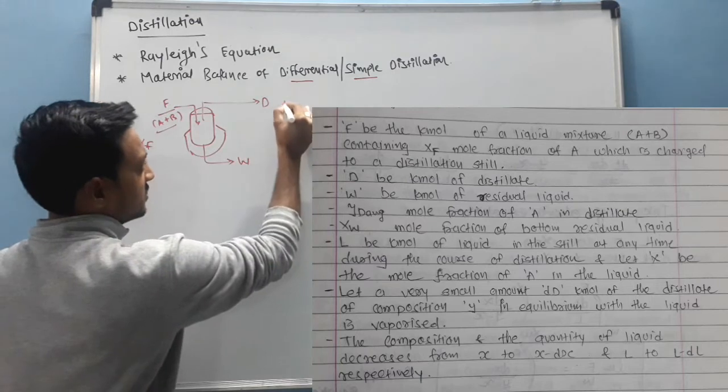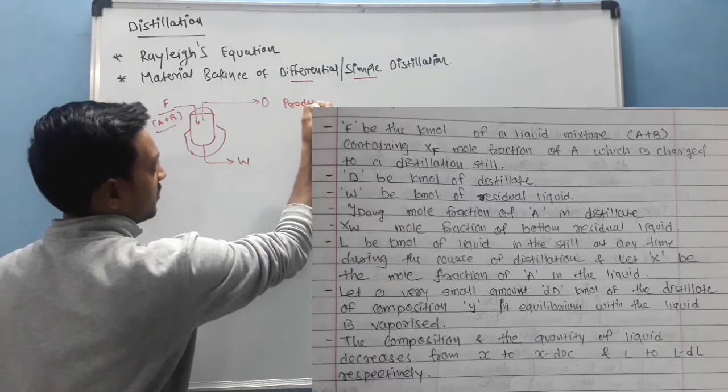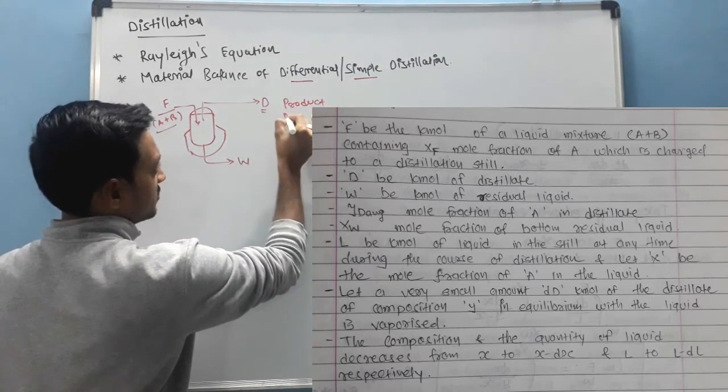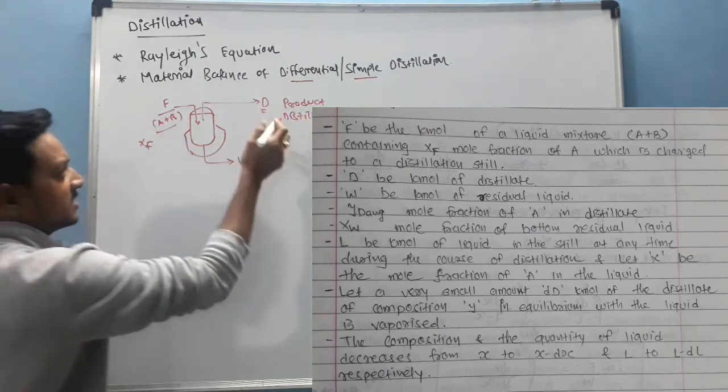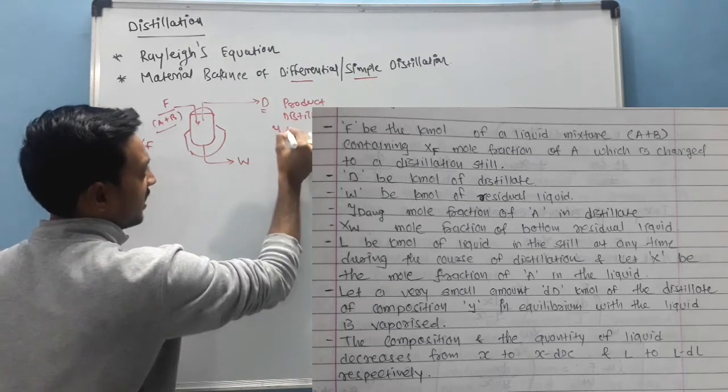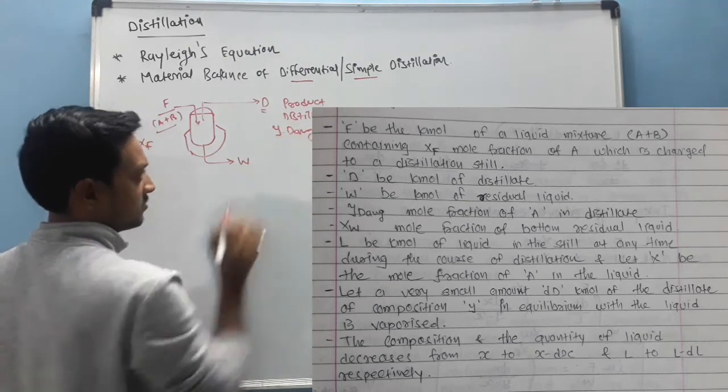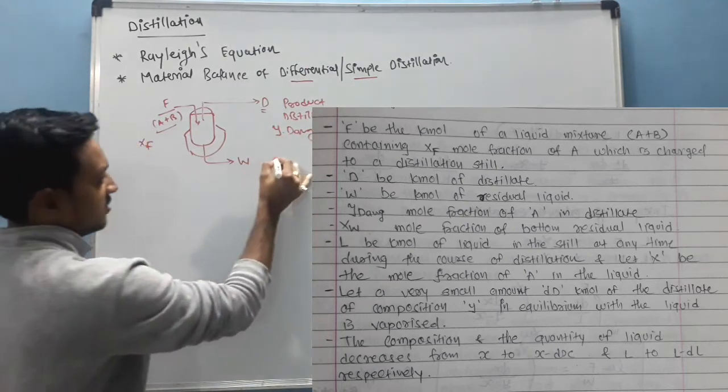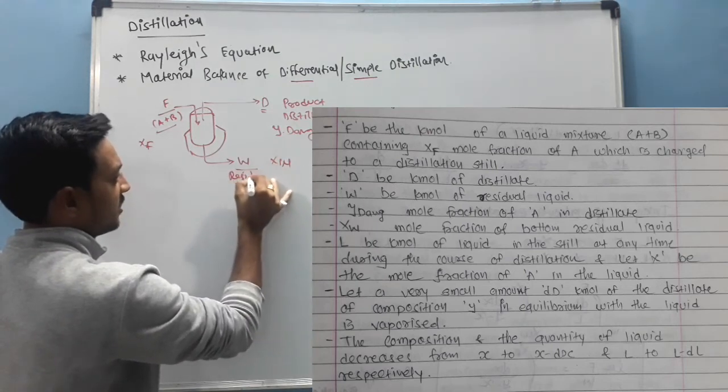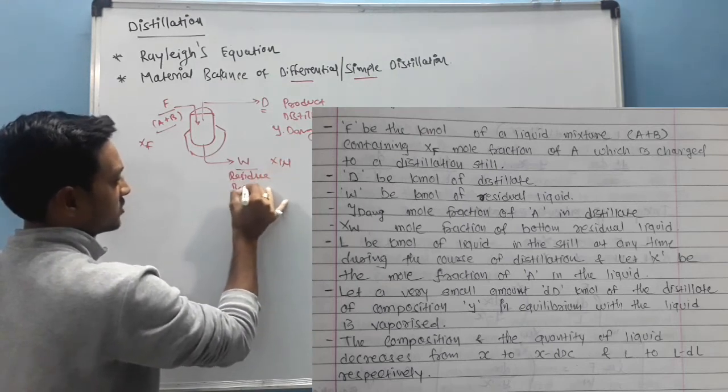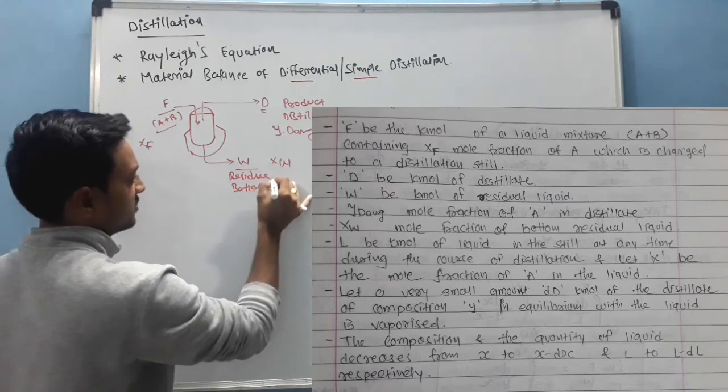Our product is distillate, and the fraction of A in distillate is YD average. And the fraction of A in residue or buttons is XW.